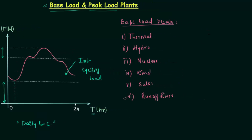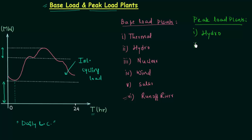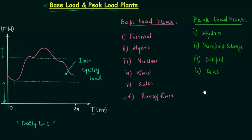Peak load plants include: first, hydro power plant, which is used as both a base load and peak load plant; second, pumped storage; third, diesel plant; and fourth, gas plant. Now let us understand why we use these plants as peak load plants and those plants as base load plants.